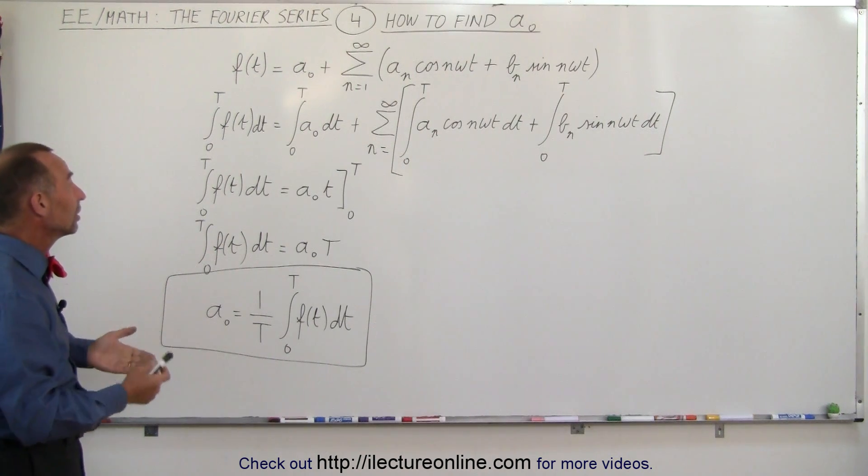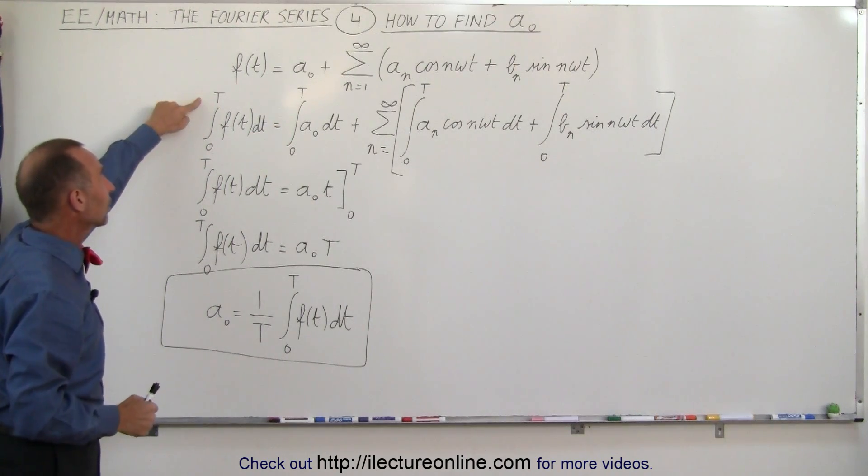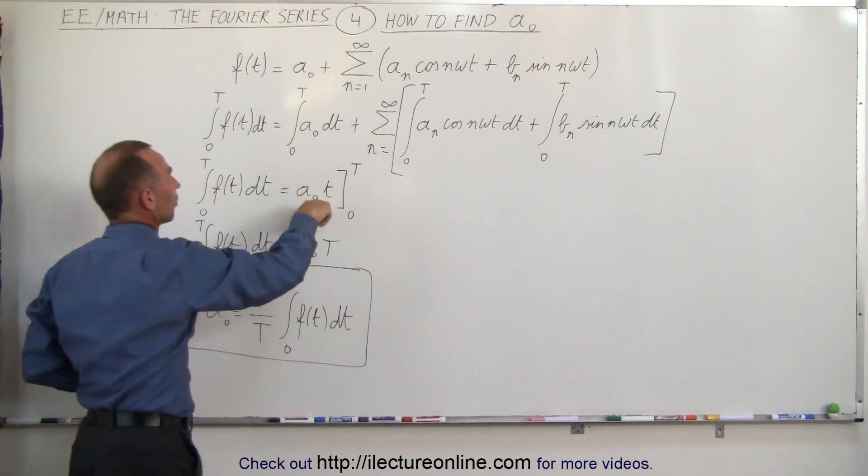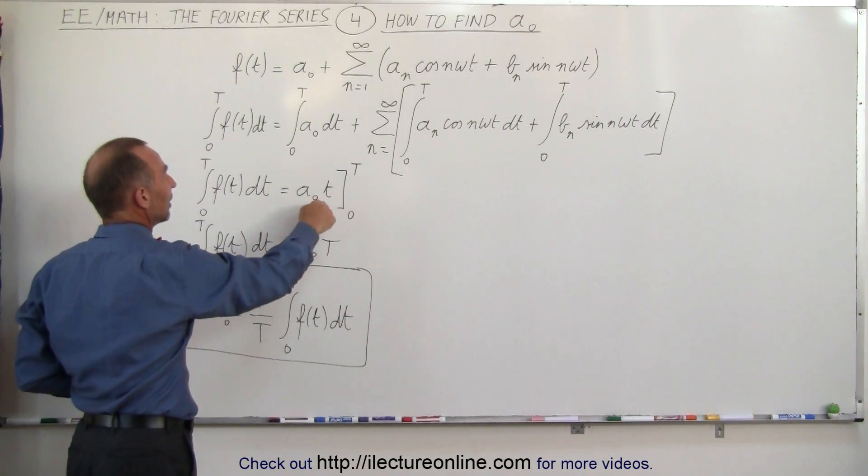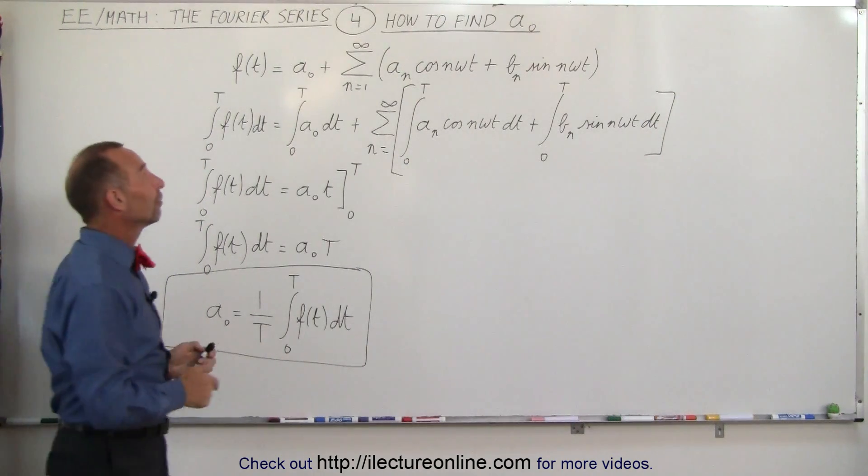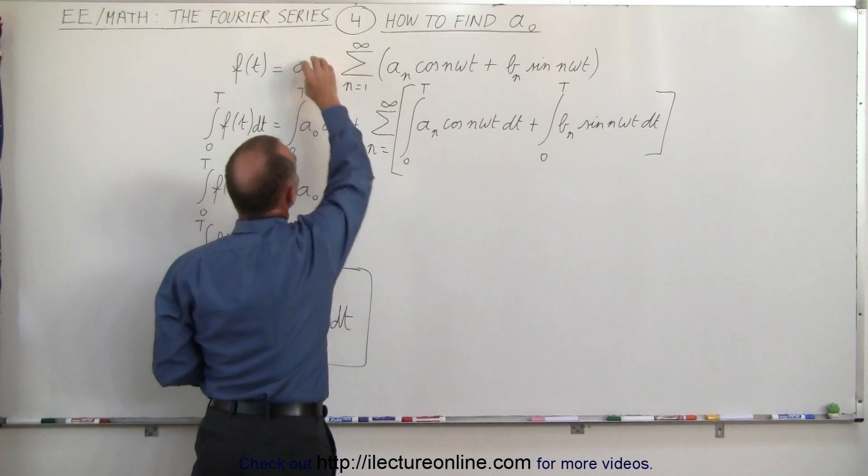So all we have to do to find it, take the integral of both sides with the limit from 0 to the period, realizing then that these two integrals will go to 0, solve this integral which is simply t, and then solve for a sub-naught. And that's how we find the first of the three constants of the Fourier series, the constant term.